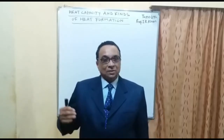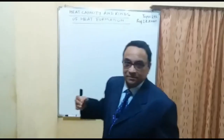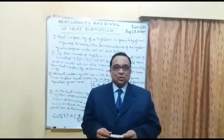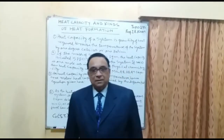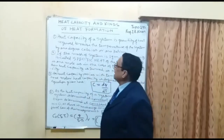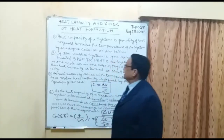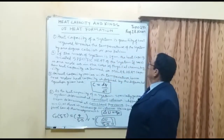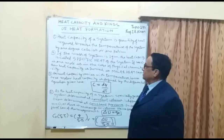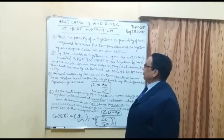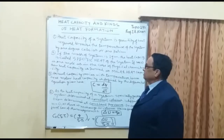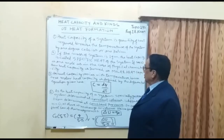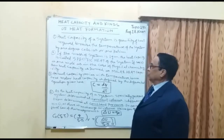Now I am going to give the mathematical explanation of heat capacity. Number one: heat capacity of a system is the quantity of heat required to raise the temperature of the system by one degree Celsius or one Kelvin.